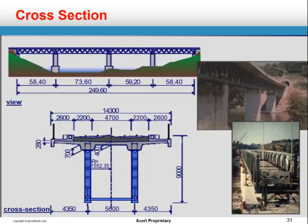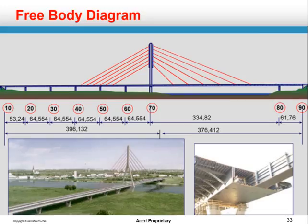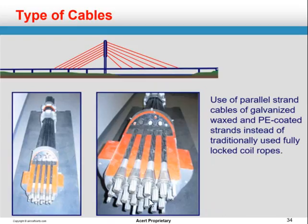A few other examples with free body diagrams, showing the free body diagram and pictures of how it's going to look and how you can calculate your loads. These bridges have been done in the US and Germany very successfully. Here's the use of parallel strand cables — these are galvanized, wax and PE coated polyethylene coated strands, instead of the traditionally used fully lobed coiled ropes.